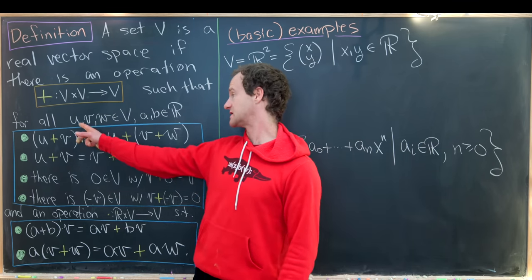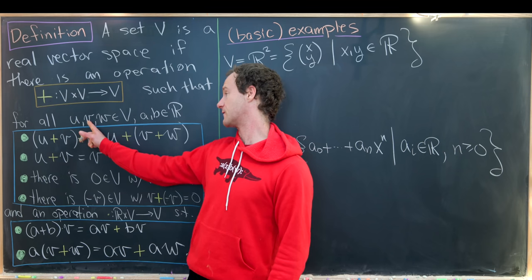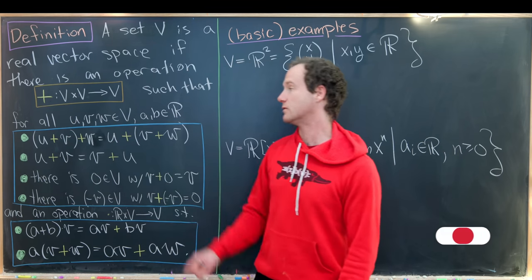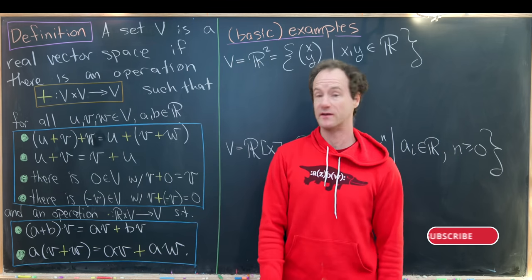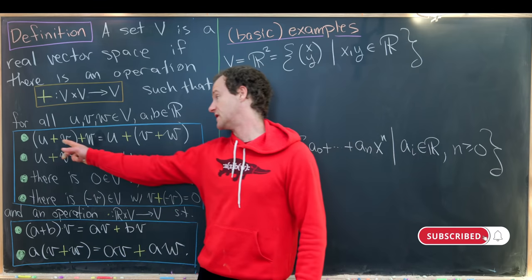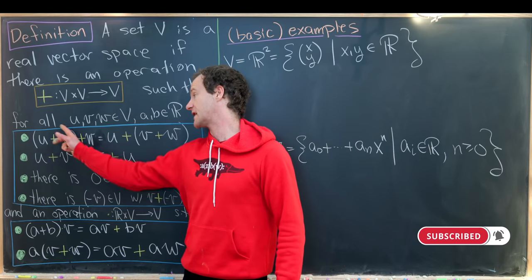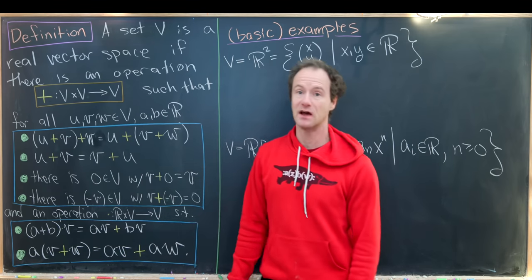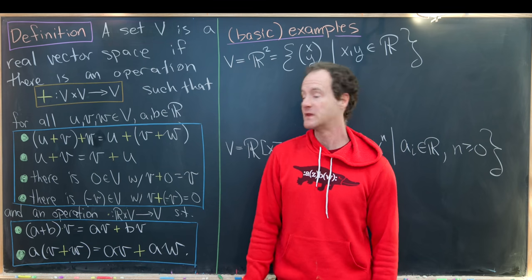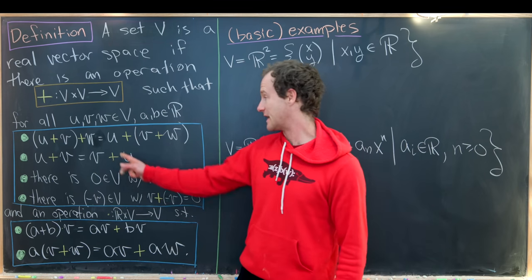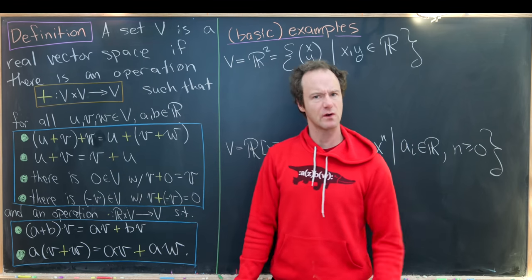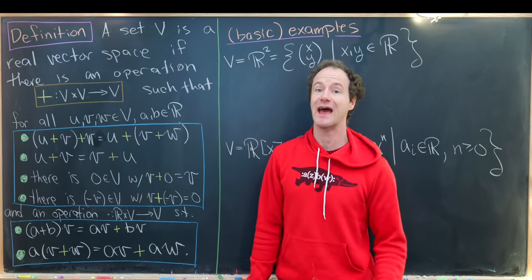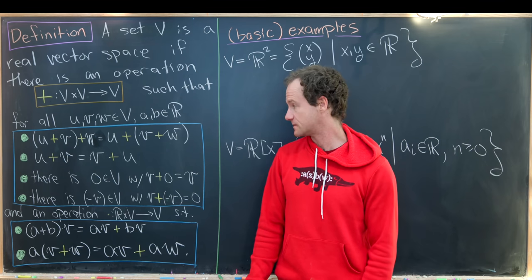Those four axioms are built out of three vectors, which I'll call u, v, and w, which are in V. The first says that if you do vector addition of u plus v, and then add w, it's the same as grouping it the other way. So in other words, we've got an associativity axiom for vector addition.